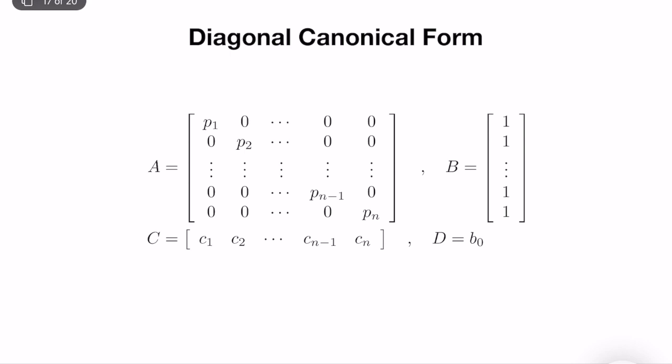For an n-dimensional system, the B matrix is a simple ones vector. The C matrix is composed of the partial fraction expansion coefficients. The D matrix is b0. The A matrix is a simple diagonal matrix where all of the elements are equal to the poles of the system, which are also equal to the eigenvalues. As we know from continuous state-space systems, eigenvalues and poles are equal to each other, and it is the same here — poles and eigenvalues are the same.